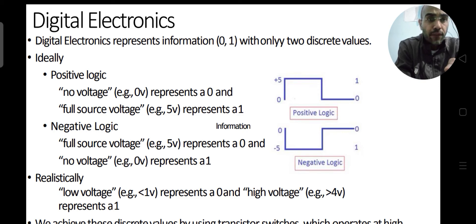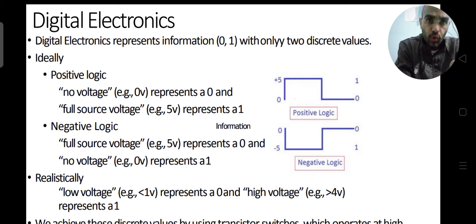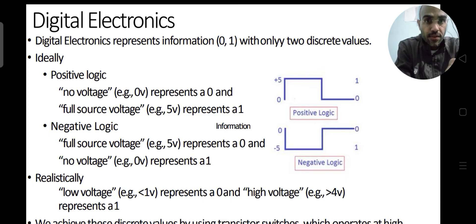Whereas, if we represent the high value — let's say 5V — by 0, and the lower side value, let's say 0V, by 1, then such a logic is called negative logic. Both logics are useful and used in system design. Usually, people use positive logic, as it is easy to understand. But in some applications, we may have to use negative logic.